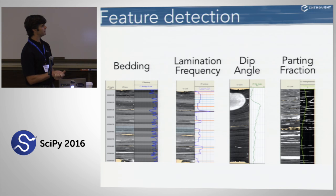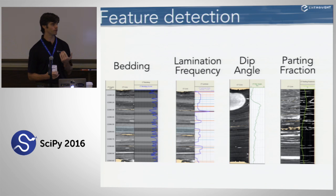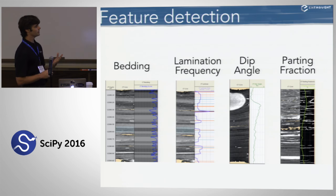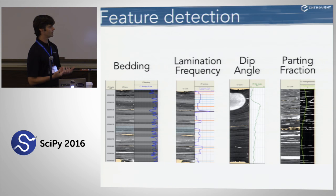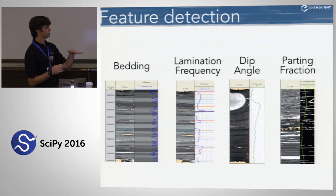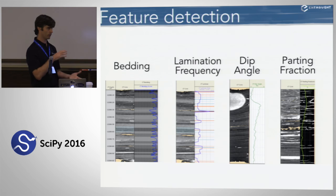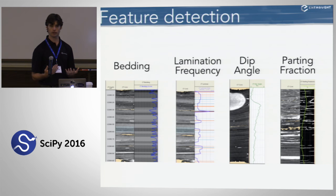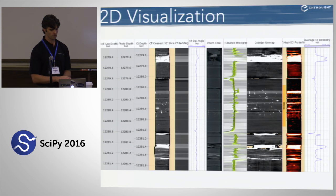Once we've cleaned it up, we can detect some features. We do bedding detection looking for changes in the average CT number — a change-point detection algorithm defines where bed boundaries occur by looking for average density changes. We compute lamination frequency, which represents higher-frequency changes in the CT number. We can also compute the dip angle automatically using a dynamic time warping approach. And we look for fractures — in this case, parting fractures: pancake-shaped fractures that occur when the core gets extracted and overburden is removed. The density of those fractures gives some indication of the mechanical properties of the rock, which drillers are very interested in.